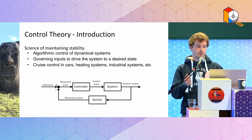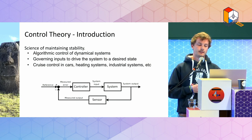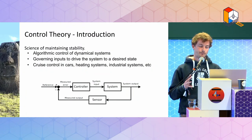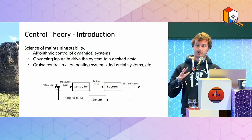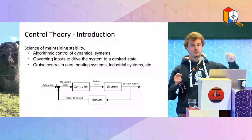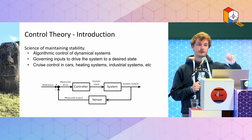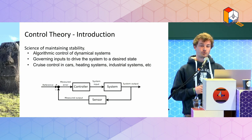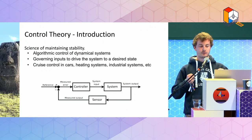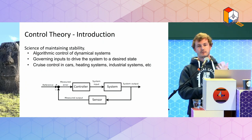More formally, you have a system with levers to pull, and the controller pulls those levers. On the other hand, you have a sensor that measures the state of the system and feeds that back into the controller as an error relative to the target. The controller does its math to properly pull the levers to change the state of the system and make it converge toward the target.